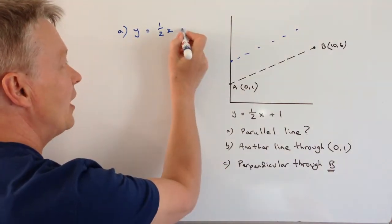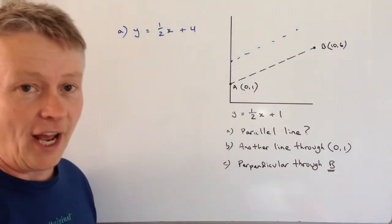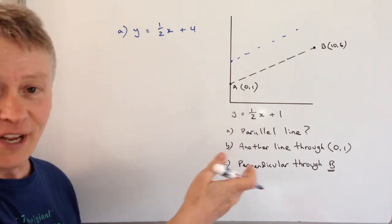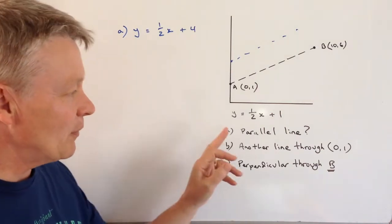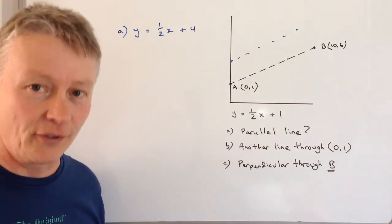So it could be plus four or you could have minus fifteen something like that. It doesn't really matter providing the gradient remains the same. So in terms of a parallel line it's just all about the gradient.